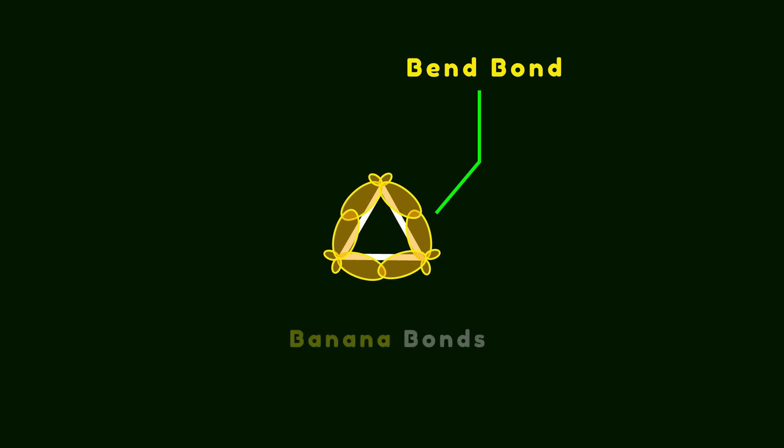Cyclopropane itself is the smallest ring in organic chemistry and shows unique properties due to having bent bonds. In other words, molecular orbitals have to bend to create a three-membered ring. This unique arrangement of orbitals is also called banana bonds. As a result, bent bonds have a smaller overlap compared to a normal carbon-carbon bond, leading to creation of weaker bonds.